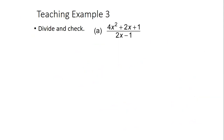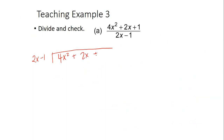So here we have four X squared plus two X plus one. I'm going to set up my division — two X minus one goes on the outside. When it's written in fraction form, the cowboy rides the horse. At night, the cowboy goes inside and the horse stays outside. That's how you know when you're setting up your division correctly.